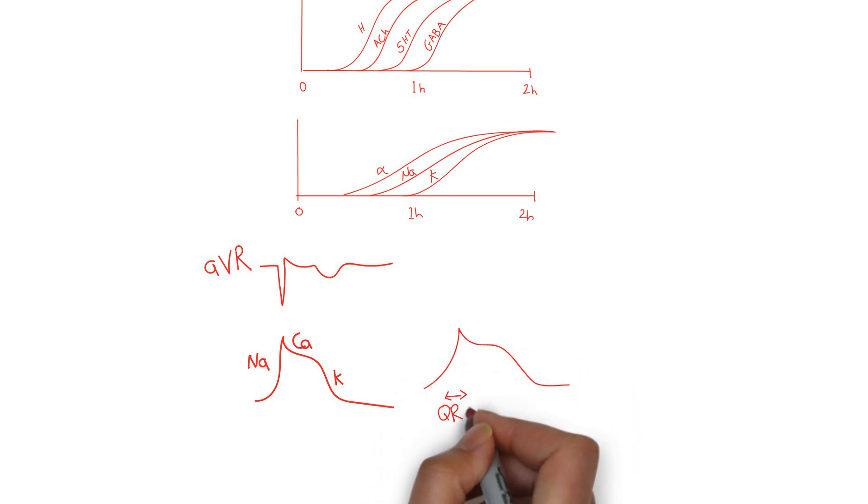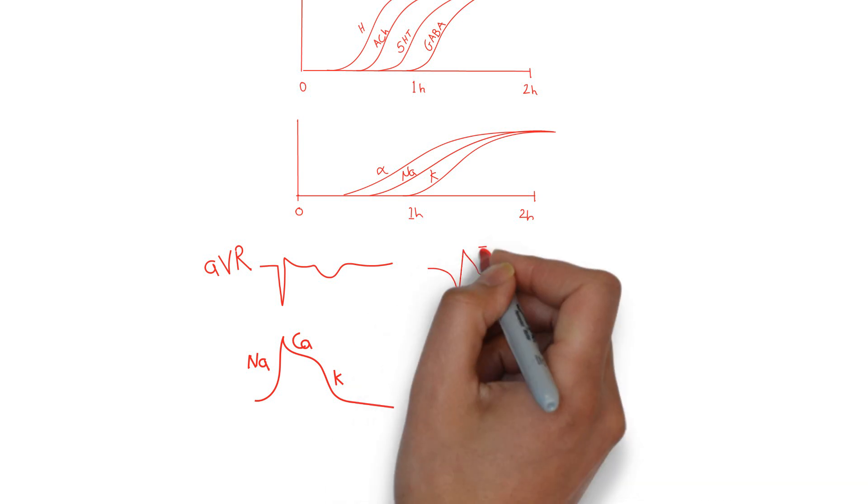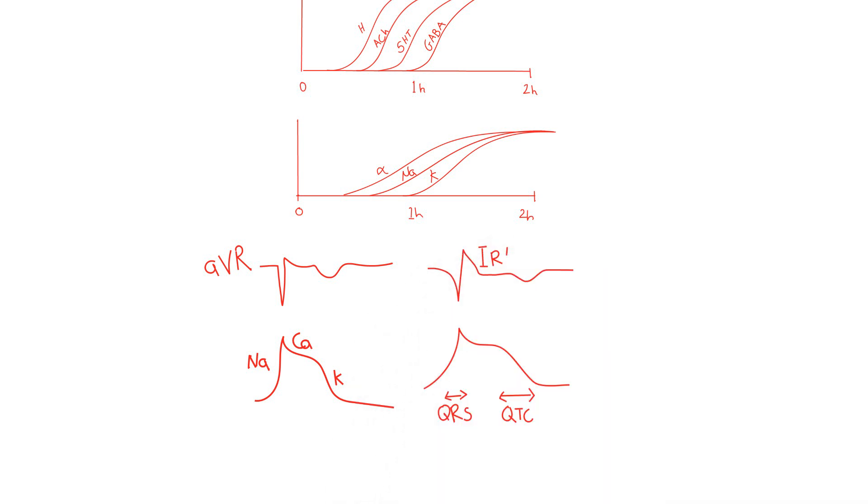Sodium channel blockade, therefore, generates a widened QRS, and potassium channel blockade generates a widened QTC. But there's another EKG finding that precedes QRS widening and QTC prolongation, and that is the terminal R wave in AVR.